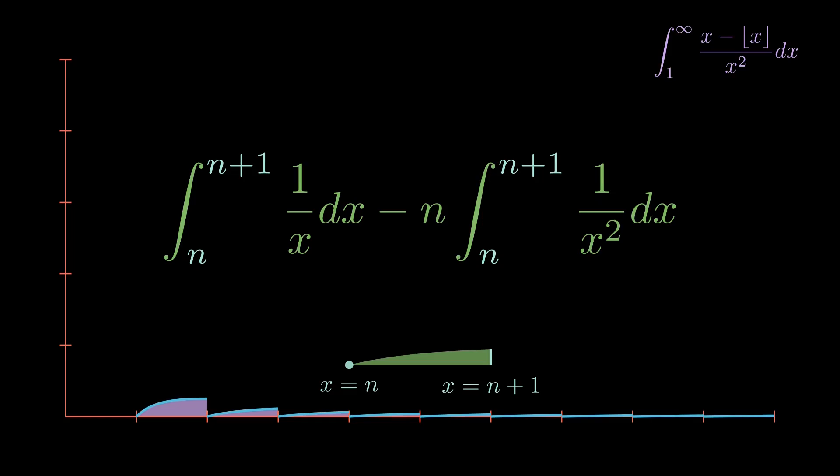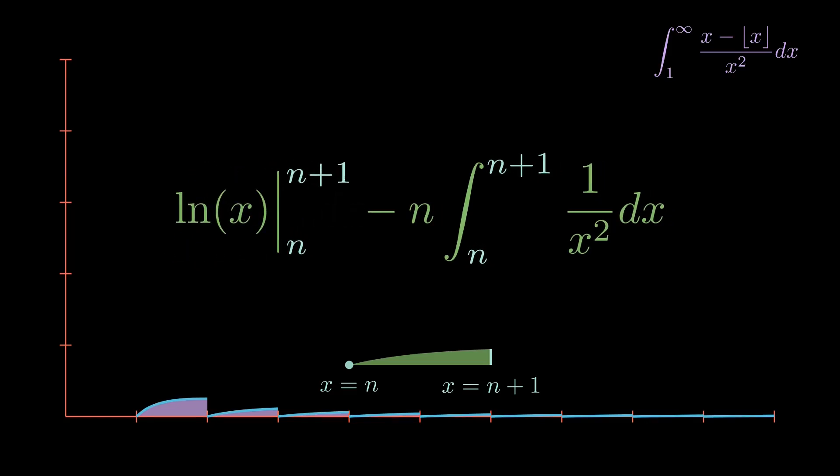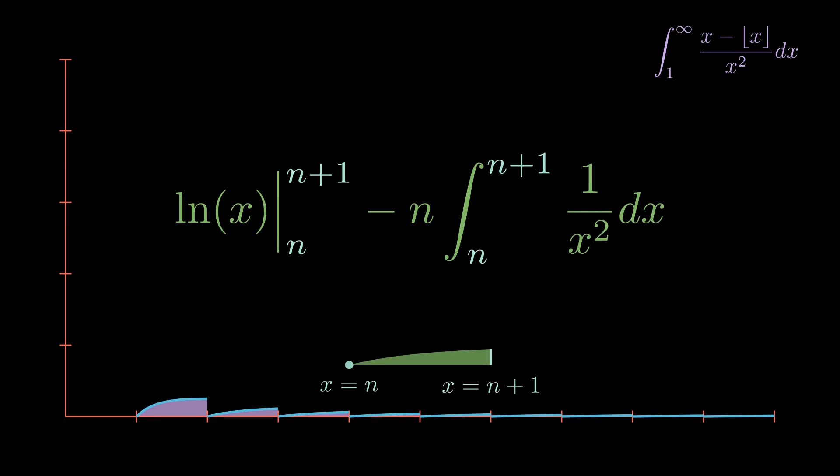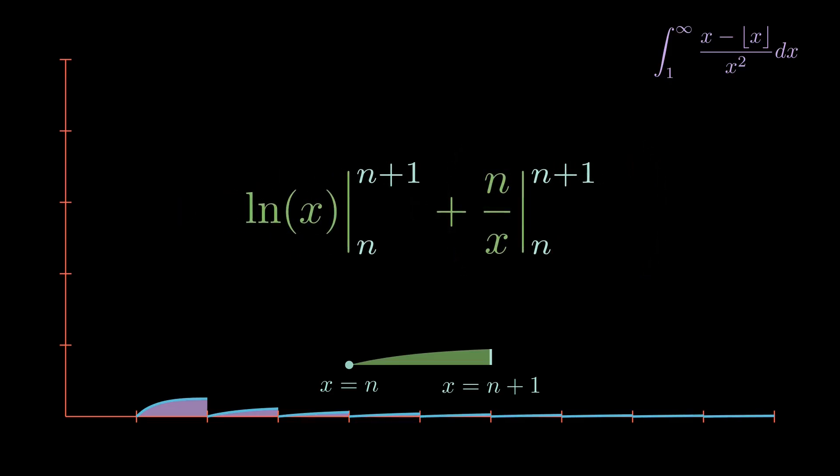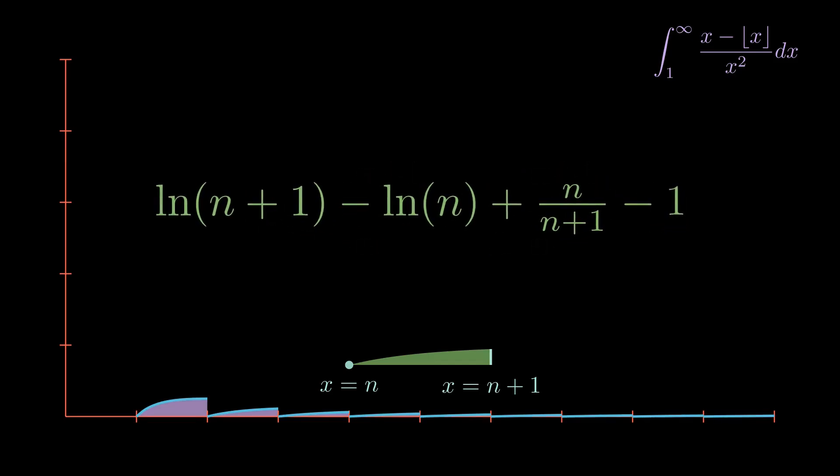The integral of 1 over x is the natural log of x. Notice we don't need to include absolute value since we are looking at strictly positive x. The integral of 1 over x squared is negative 1 over x. Evaluating each of these at the bounds of integration, and doing some more algebra.